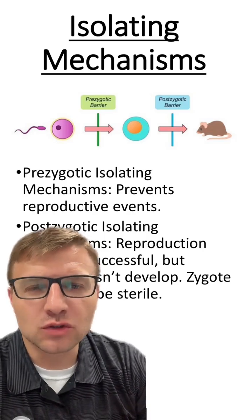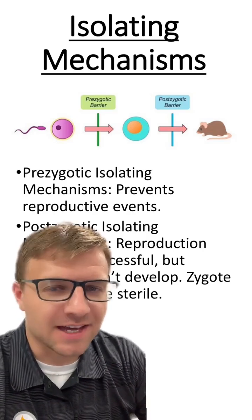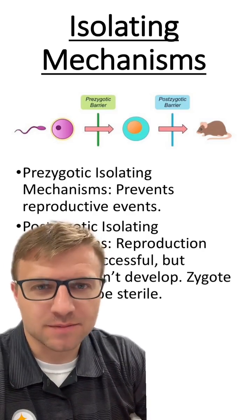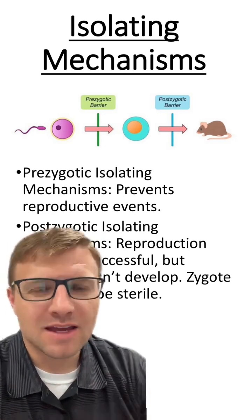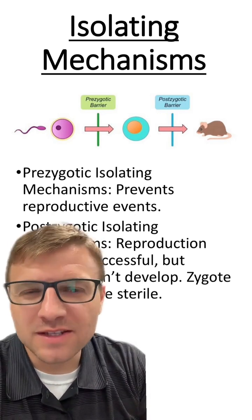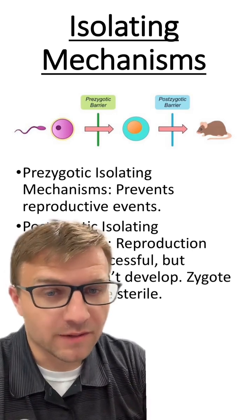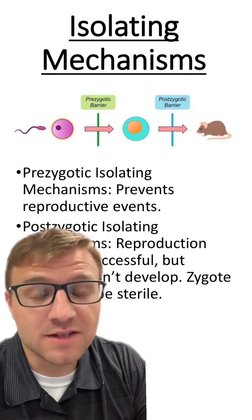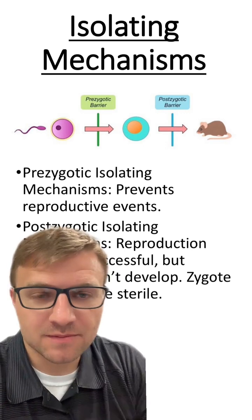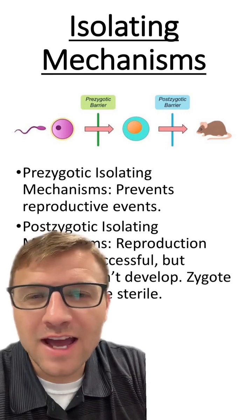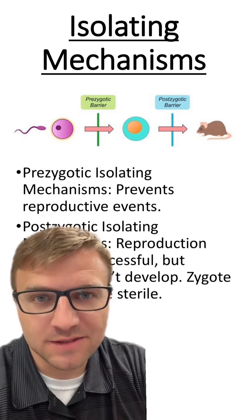Let's go over a type of evolution known as pre-zygotic isolating mechanisms. These are basically mechanisms that prevent the zygote from forming. In other words, these will prevent reproduction events. There are five main types of pre-zygotic isolating mechanisms.